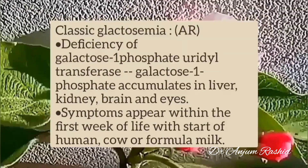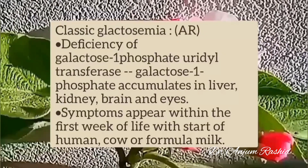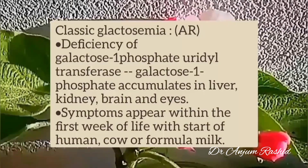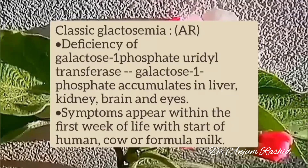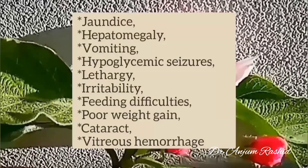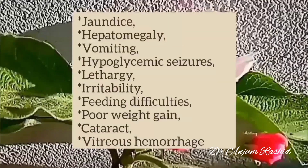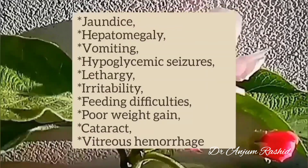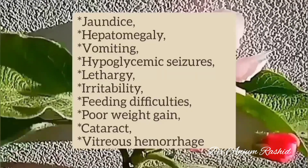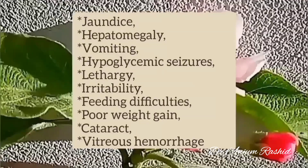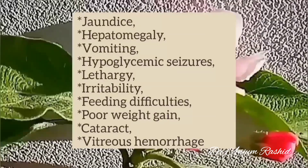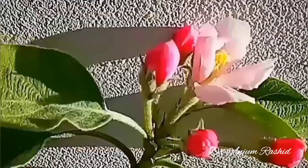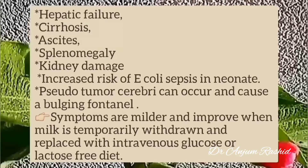Symptoms appear within the first week of life with the start of human, cow, or formula milk. These include jaundice, hepatomegaly, vomiting, hypoglycemic seizures, lethargy, irritability, feeding difficulties, poor weight gain, cataract, and vitreous hemorrhage.